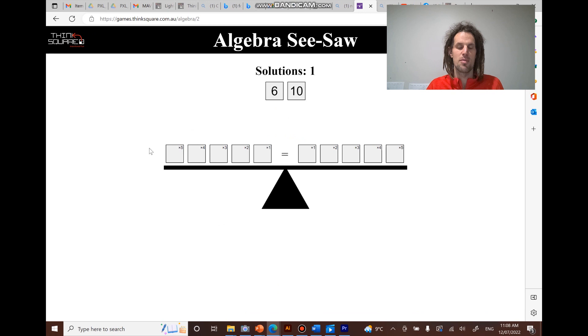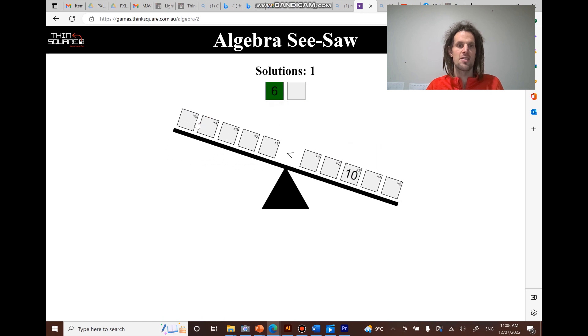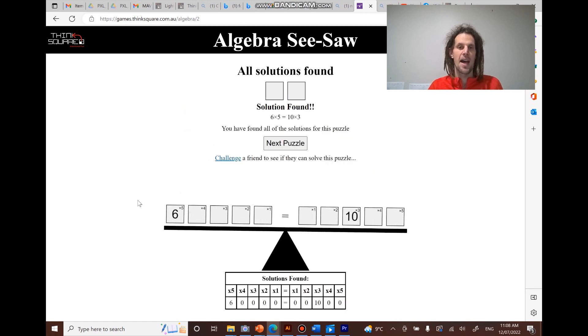I'll do another one because they get a bit more interesting. So this one, we can't just do 10 times 6 and 6 times 10. But if we count up by 10s, 10, 20, 30, and count up by 6s, we can both get to 30. So 10 times 3 and 6 times 5. And that solves that one.